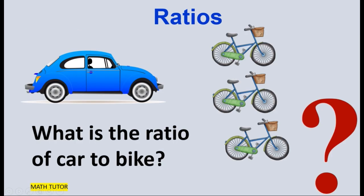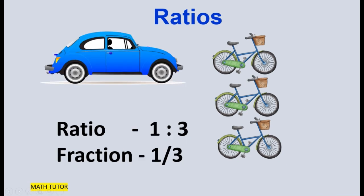What is the ratio of car to bike? There is 1 car and 3 bikes here. So the ratio will be 1 is to 3. If you write the ratio as a fraction, it will be 1 by 3.